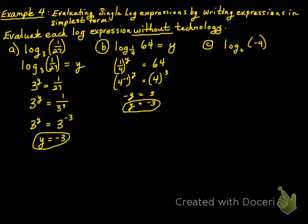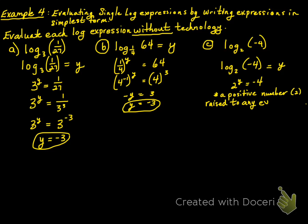And part C: log base 2 of negative 4 equals y, so 2 to the power of y would have to equal negative 4. But a positive number 2 raised to any exponent cannot result in a negative number. So this is a trick question — there's no solution.